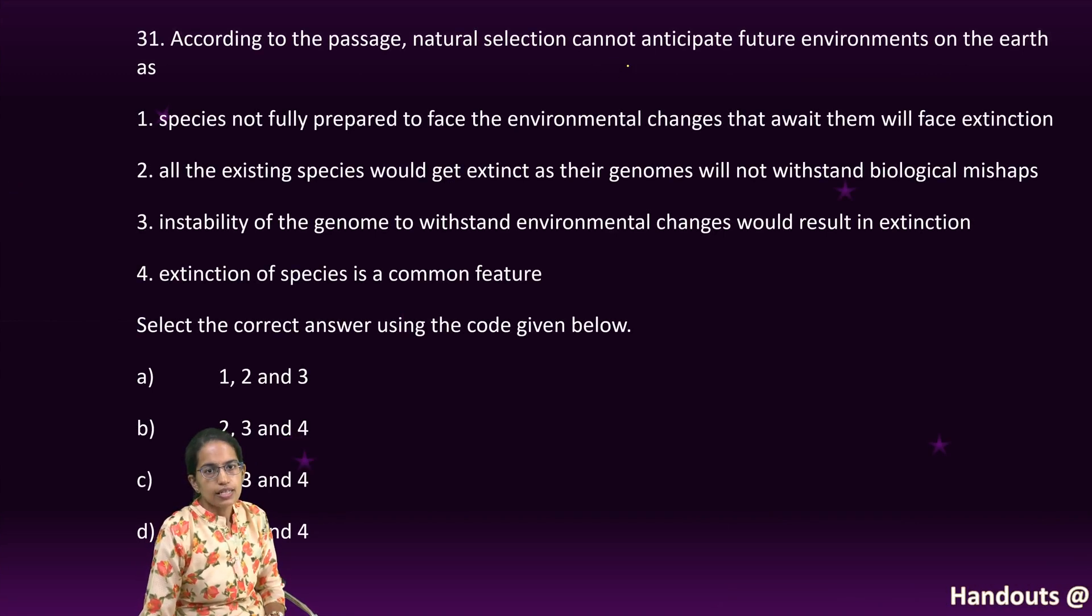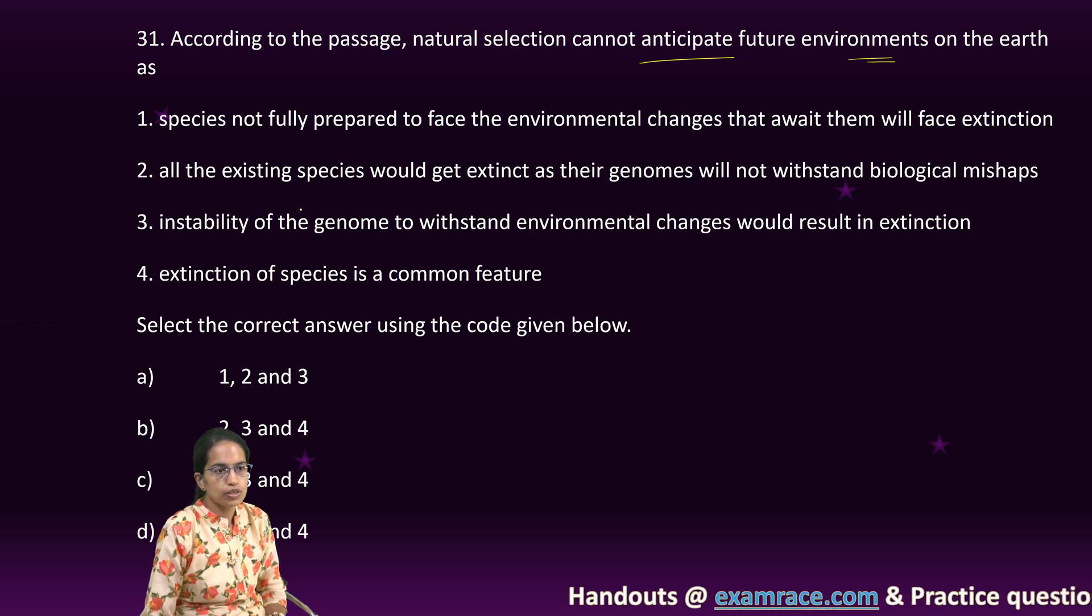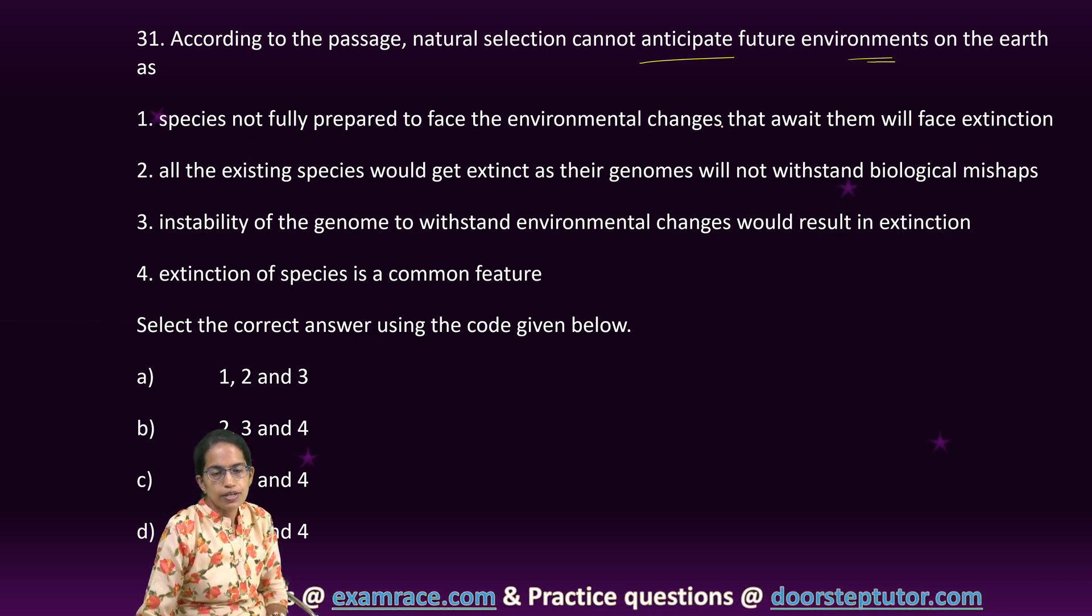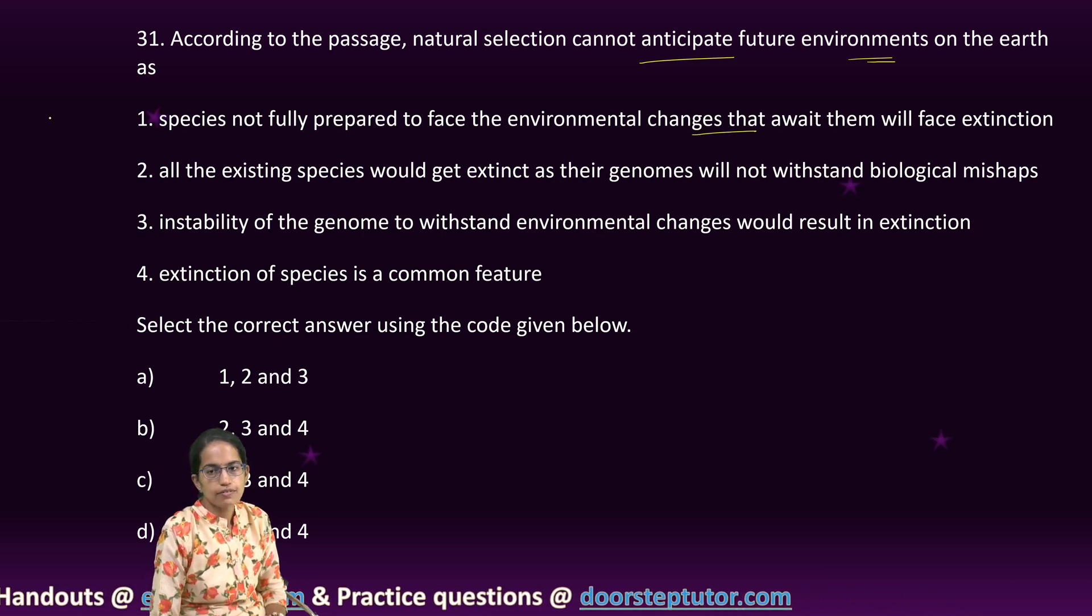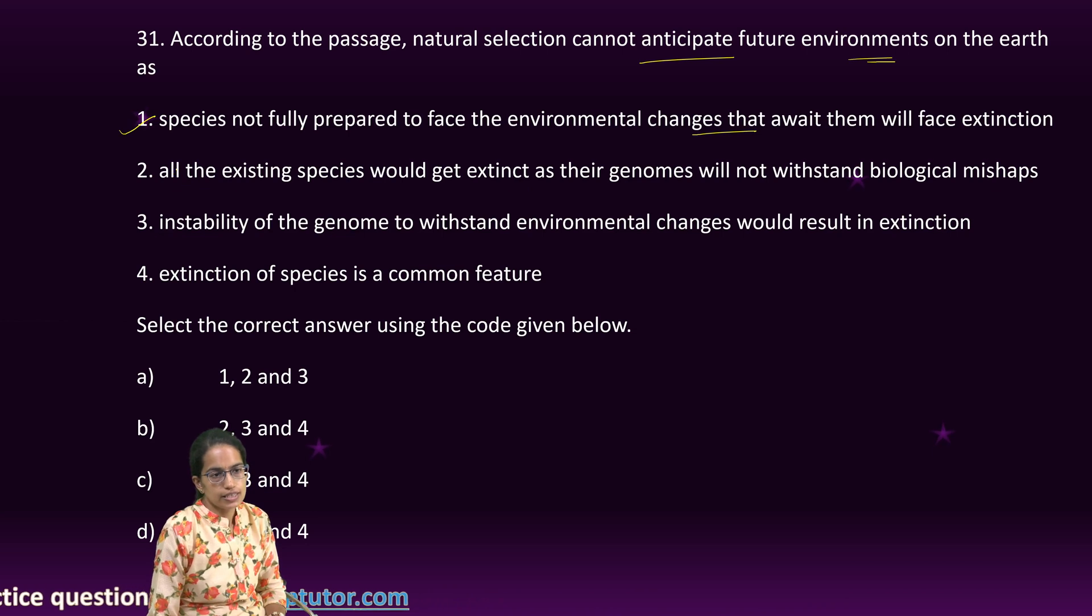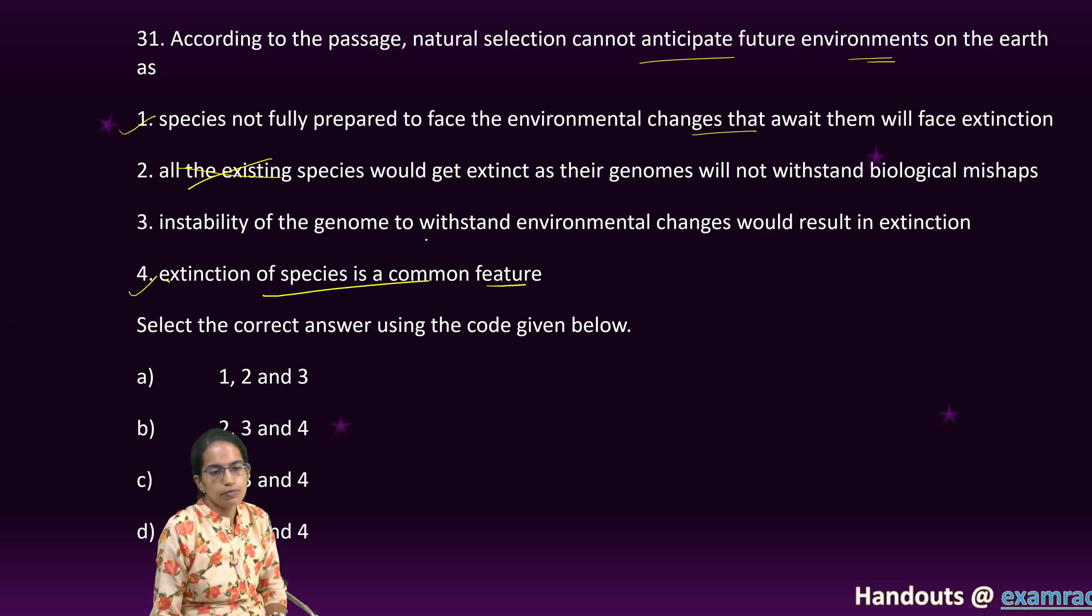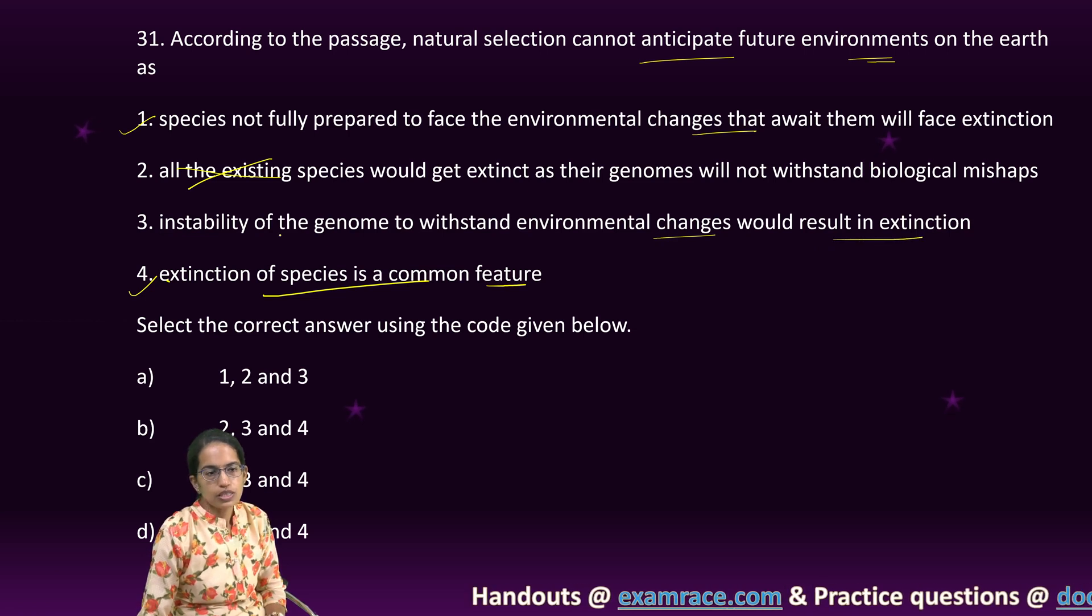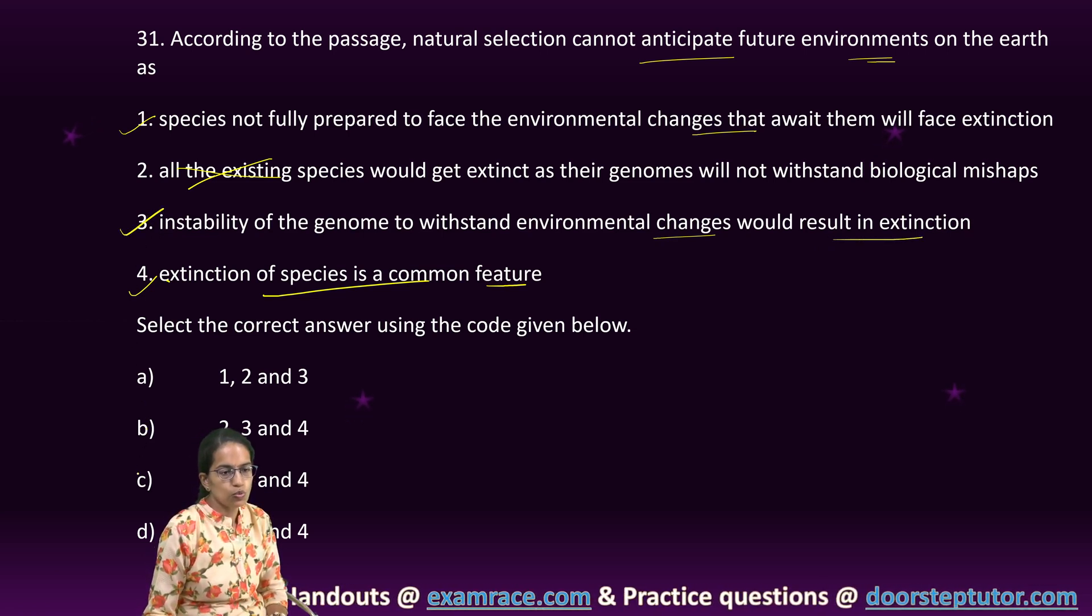The set of existing organisms can never be fully prepared for environmental catastrophes that await life. Here, according to the passage, natural selection cannot anticipate the future environment on the earth as species are not fully prepared to face the environmental challenge that await them. All the species would get extinct. The passage does not talk about all the species getting extinct. Extinction is a common feature. Correct. And the instability of the genome to withstand environmental changes would result in extinction. That's again given. So, 1, 3, and 4 are the correct options in this passage.